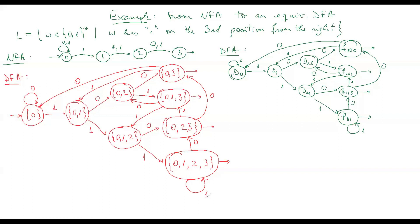As you can see, this is exactly the same automaton we discussed before, but the difference is really fundamental: this is a purely mechanical way of building the automaton — there is an algorithm behind it, and we could even write a small computer program to calculate it. Whereas the earlier construction was combinatorial, driven by a deep understanding of what it means to have words with '1' on the third position from the right.